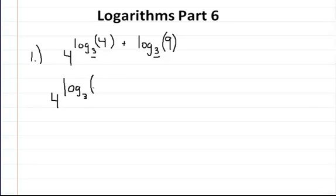And then when you combine those two you say 4 times 9. Since it's a positive, since you're adding these two together, you multiply the interior portion together. And that's going to give you 4 log of 36 base 3.